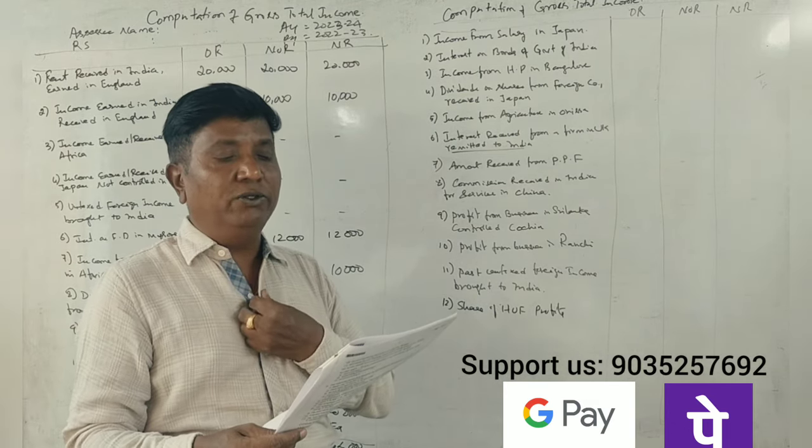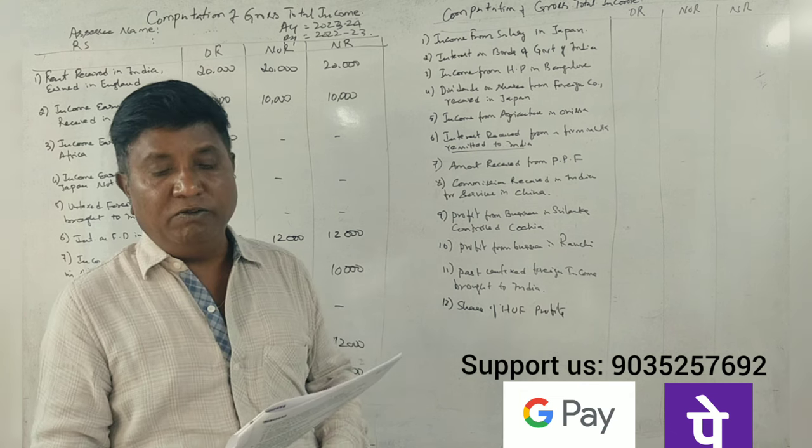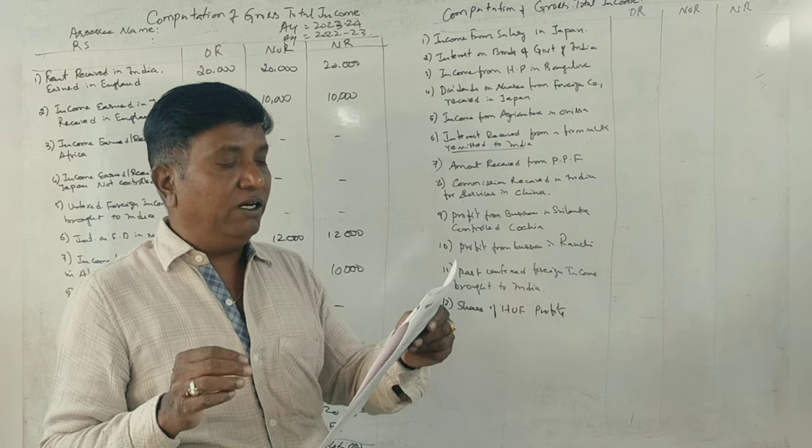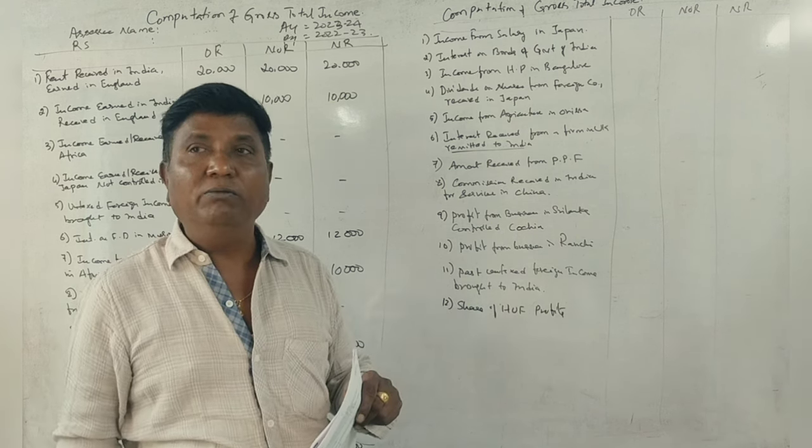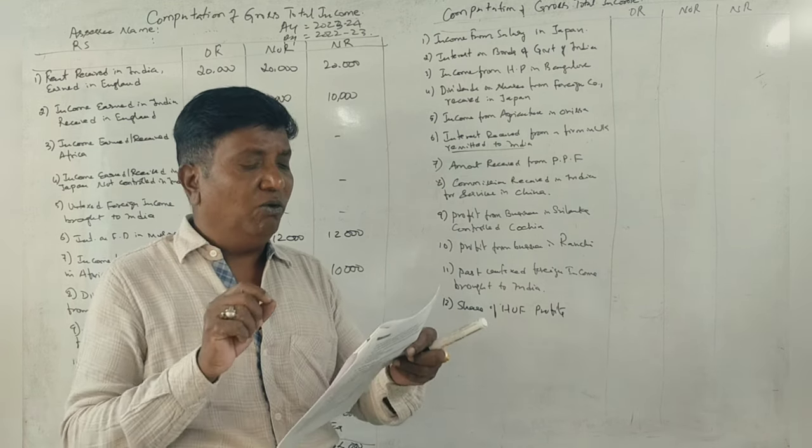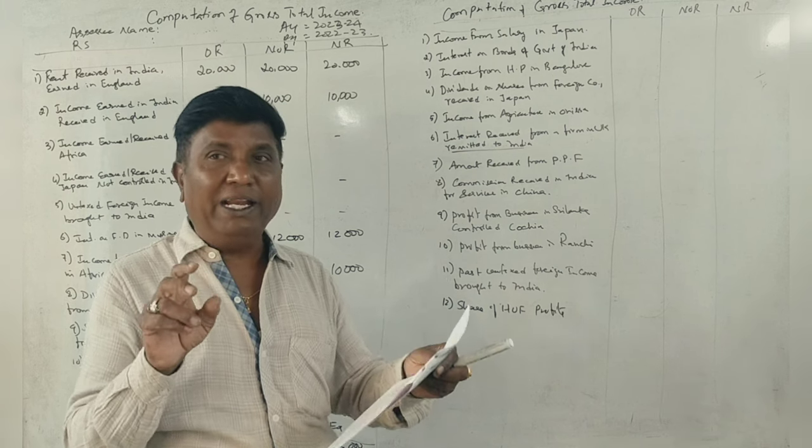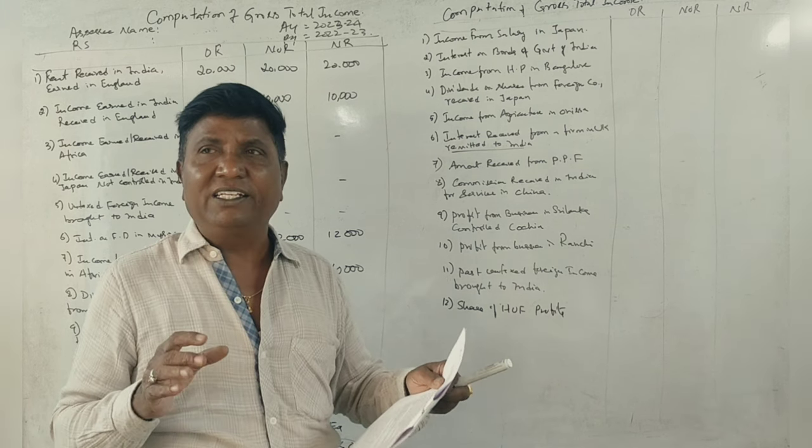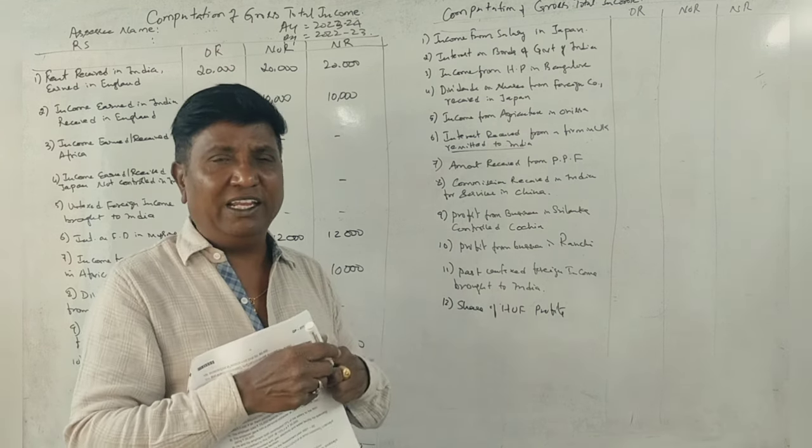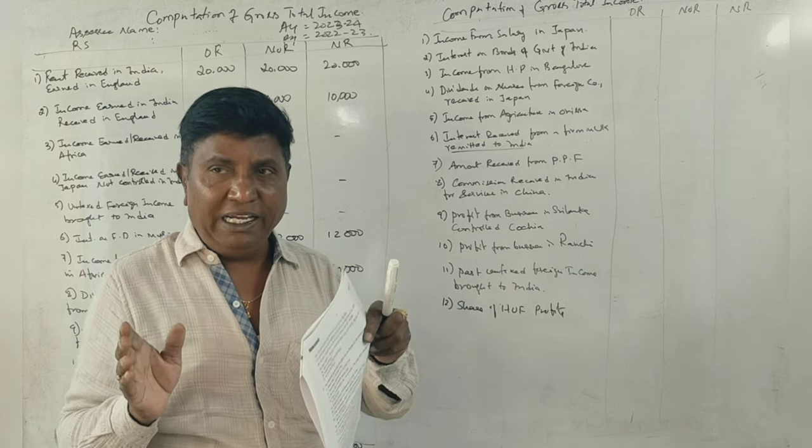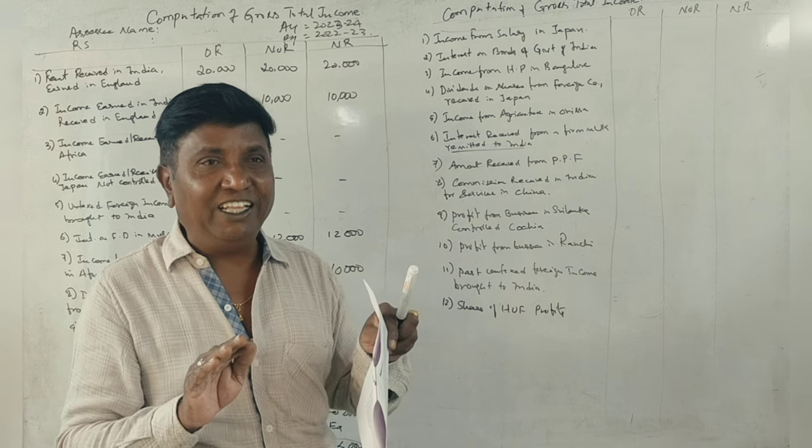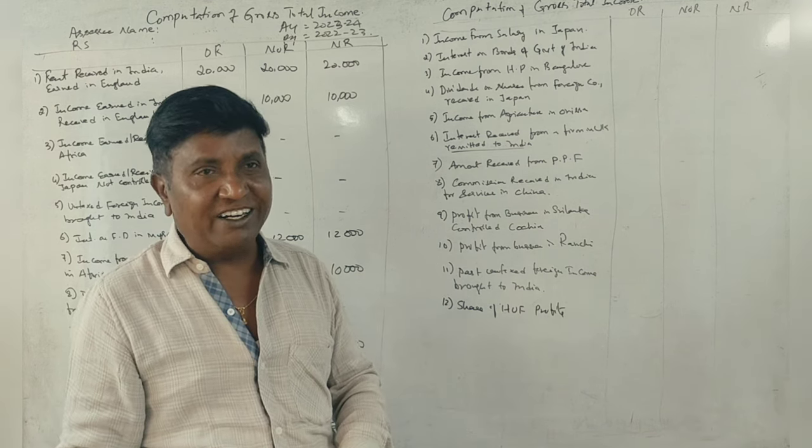Shri Rama Raju provides you the following particulars of his income for the previous year 22-23. First, income from salary in Japan, earned from Japan, received from Japan. Even if they're doing work in Japan, receiving it in Japan, they may be an ordinary resident in India.